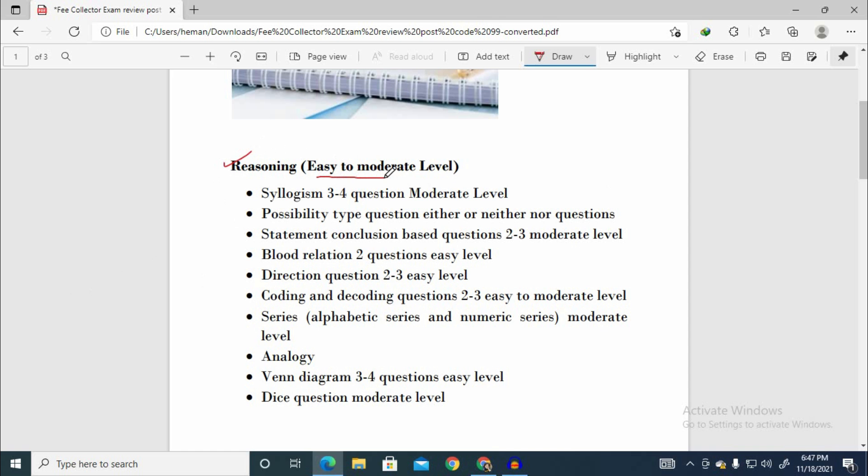Reasoning was easy to moderate level. Syllogism had 3-4 questions, moderate level. Possibility type questions either or neither nor. Statement conclusion based questions 2-3, moderate level. Blood relation had 2-3 questions. This was an easy topic.